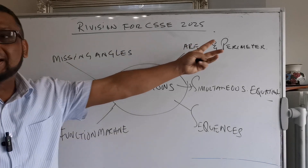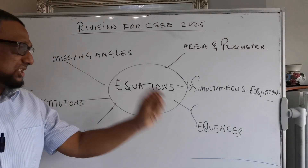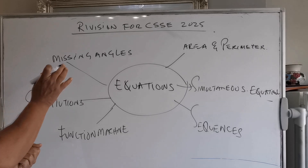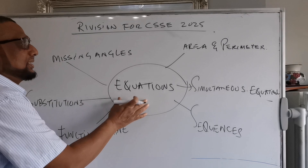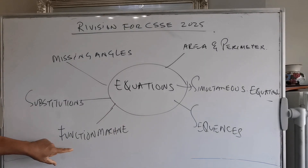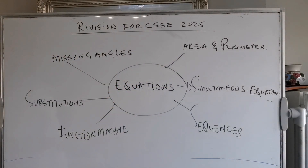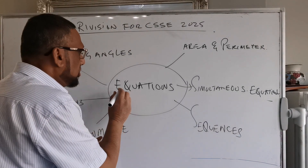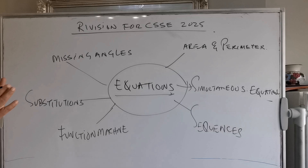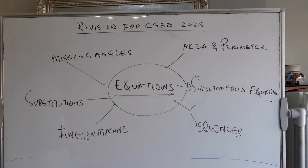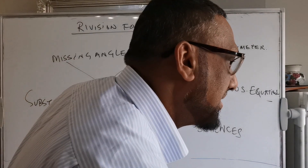I believe you already know how to find missing angles, area, perimeters, substitution, function machines, and sequences from your learning last year. But now we're discussing the application — how we can find missing angles with the concept of equation, how to find the function machine answer with the help of equation, and similarly for sequences, area, and perimeter. So I'm going to start with the basics of equations.